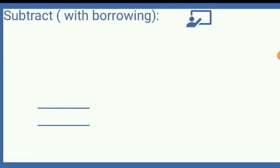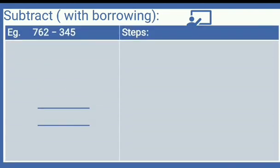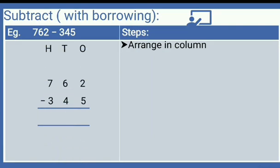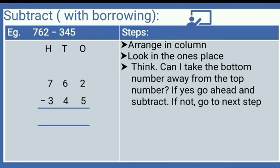Now we are going to see how to do subtraction with borrowing. For example, let's take 762 minus 345. Our first step is always to arrange in column. Then we look at the ones place and think: can I take the bottom number away from the top? In the ones place we have 2 and 5. Is it possible to take away 5 from 2? No, it is not, because 2 is smaller than 5 — same as in the apple example. So 2 will go to its next neighbor, which is 6 in the tens place, and borrow from it.